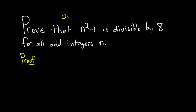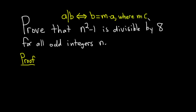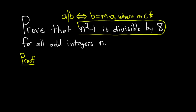We say that a divides b, or that b is divisible by a. This is equivalent to saying that b is a multiple of a — so b equals some integer m times a, where m is an element of the integers. So here, n squared minus 1 is divisible by 8 means that n squared minus 1 is a multiple of 8.